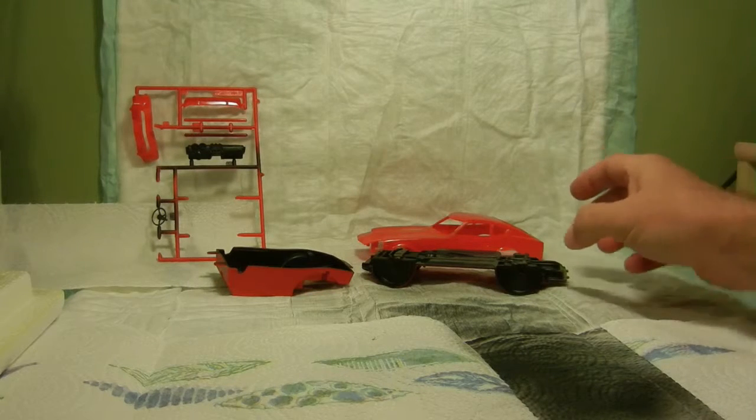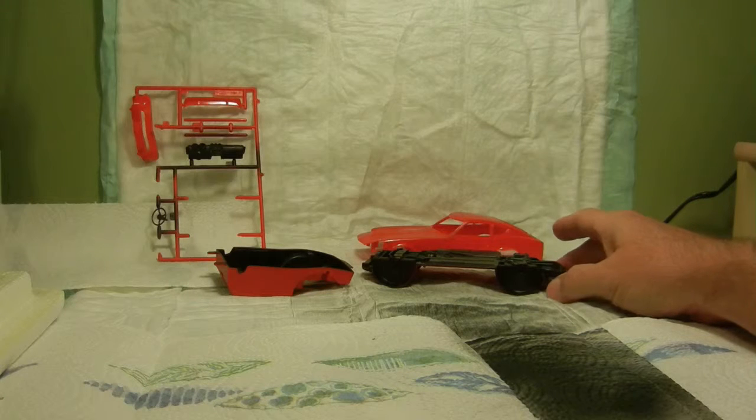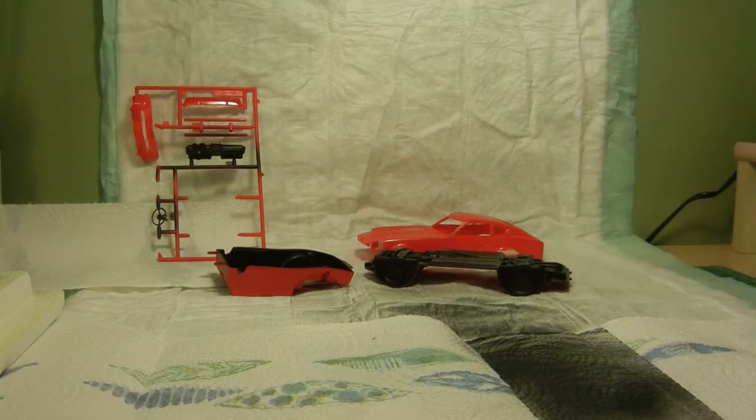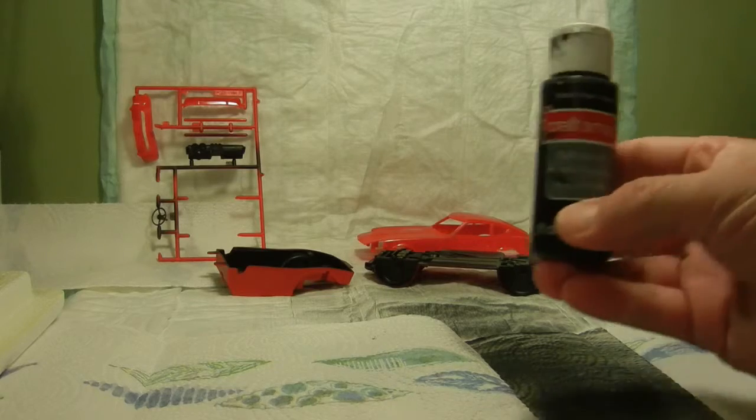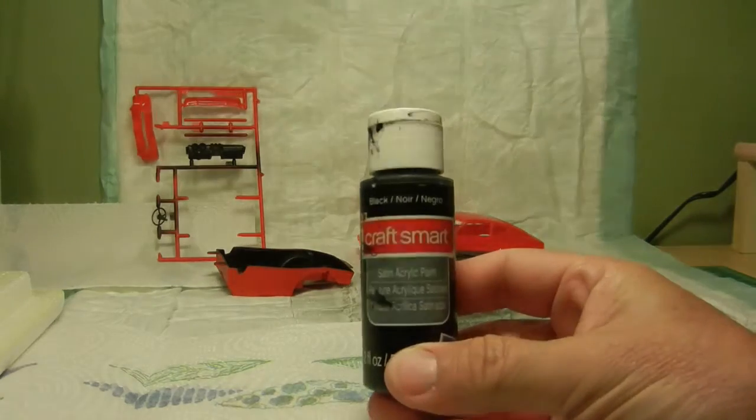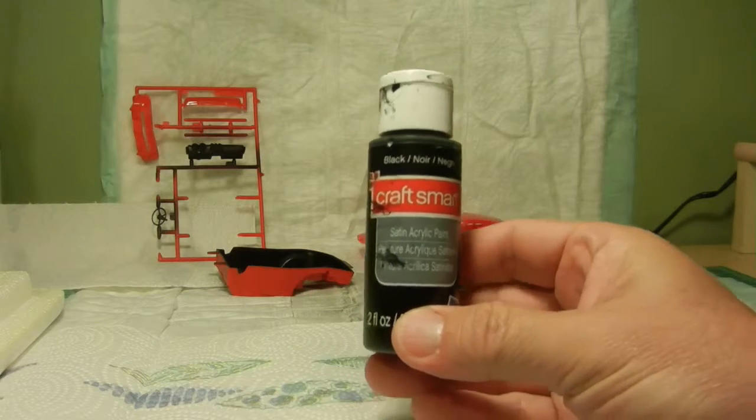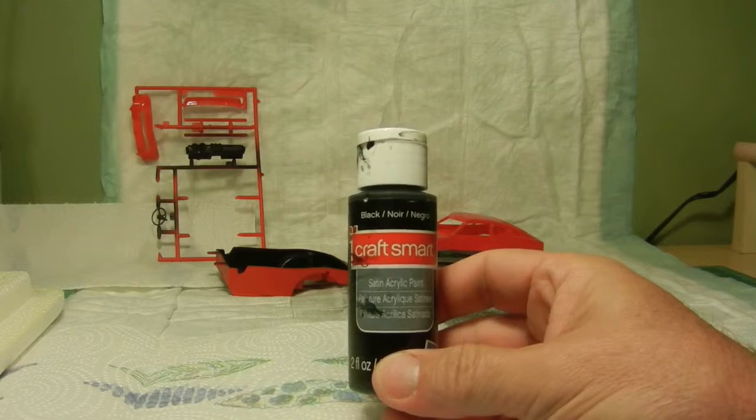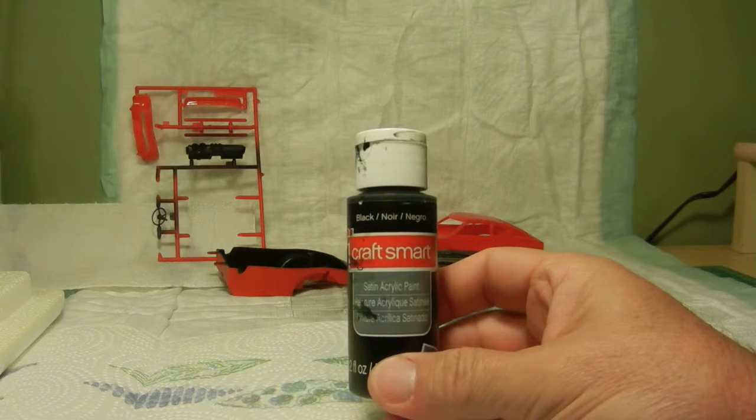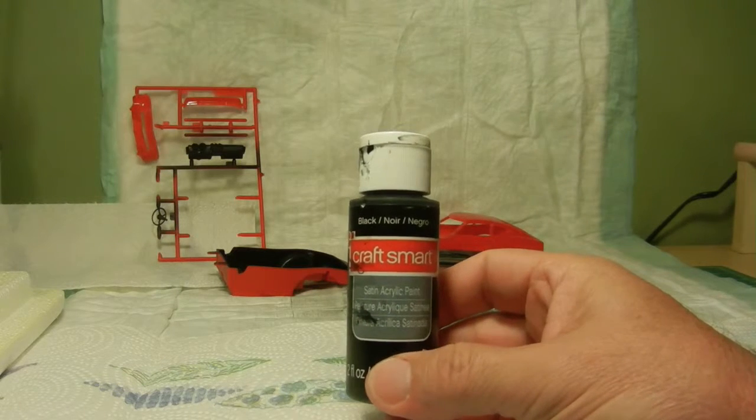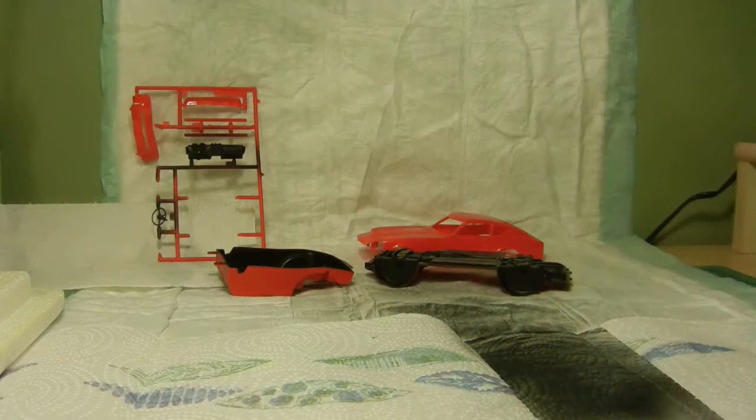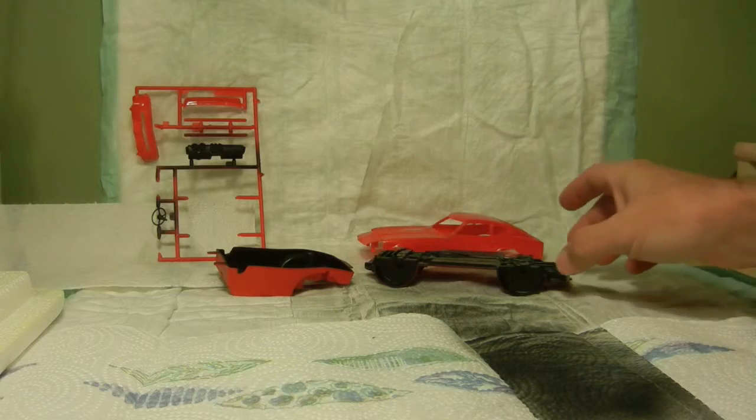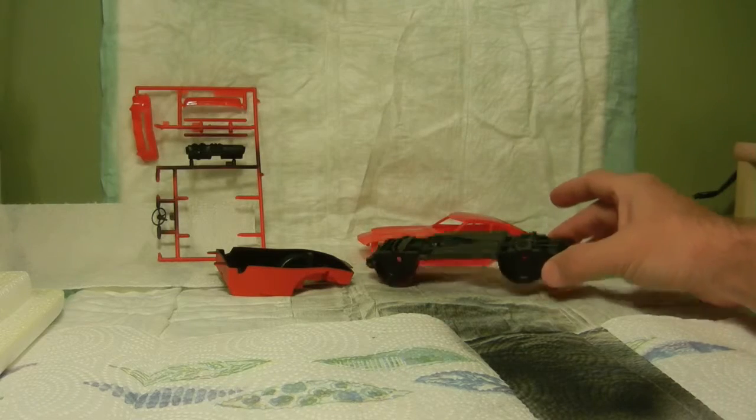Basically what I started off with is taking my airbrush and using some Craftsmart satin acrylic paint black to do some of the interior bucket, the underside of the chassis, and the dashboard using my Pache airbrush.